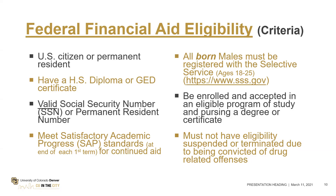You also have to be enrolled and accepted in an eligible program working toward completing a degree. You can't just be taking classes — you have to actually be working toward completing a degree. And you must not have your aid suspended or terminated due to a drug-related offense or a sexual offense.